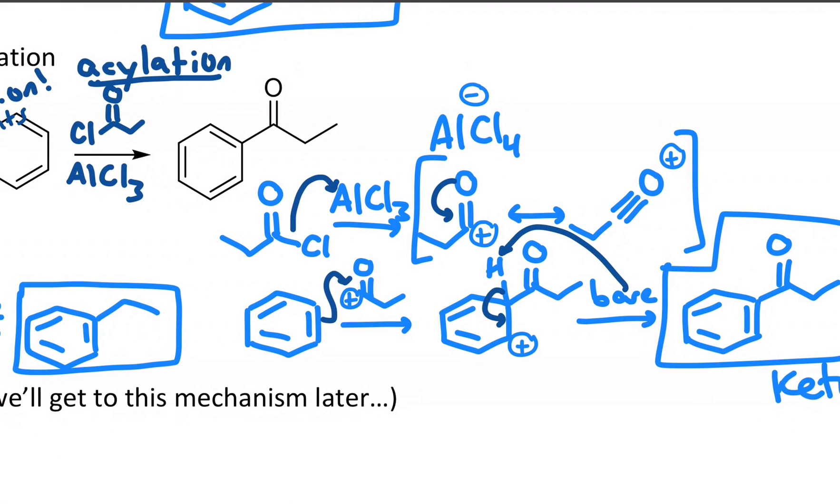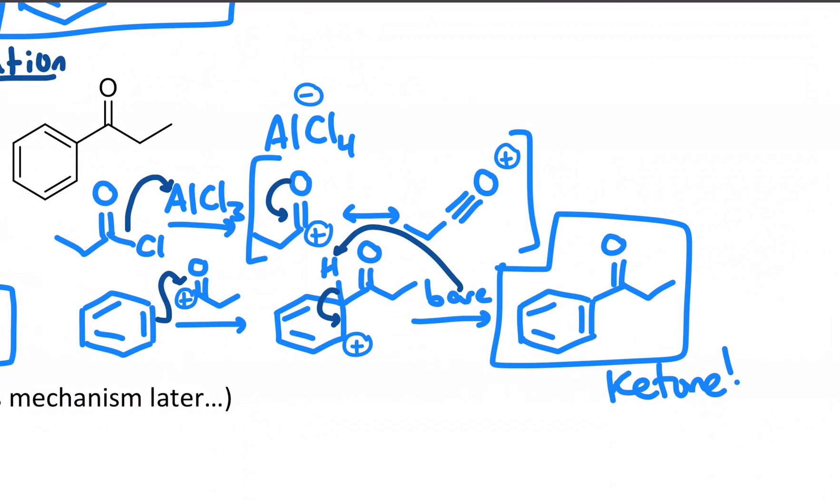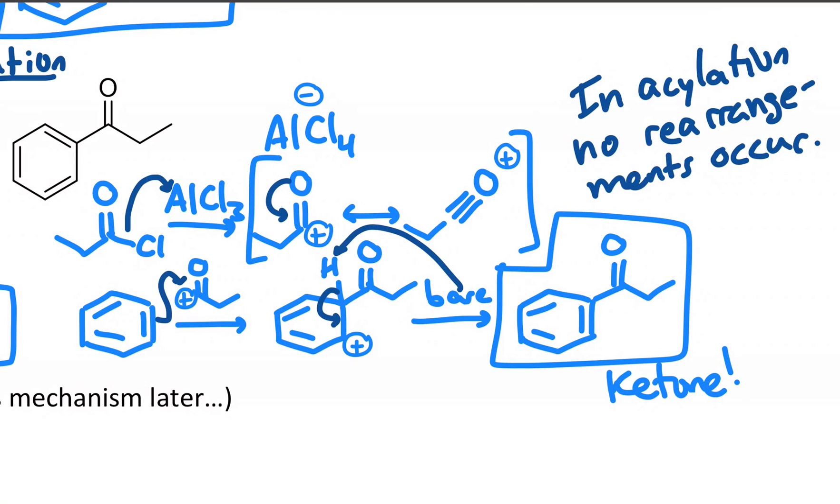This one will make a ketone attached to the ring, whereas before we just had an alkyl group. But there's ways to turn one into the other. We'll soon learn how to reduce this down to just an alkane. And from last semester, you could do a radical halogenation at the benzylic position there and actually functionalize that alkyl group. And the main takeaway from this, however, is that in acylation, no rearrangements occur.